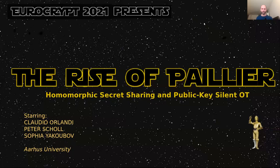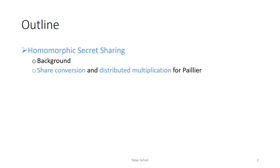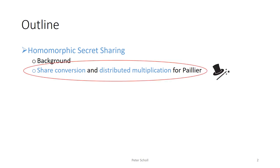Hi, my name is Peter and I'm going to tell you about this paper on homomorphic secret sharing and public key silent OT, which we build using new techniques for the Paillier cryptosystem. This is joint work with Claudio Olandi and Sofia Jakubov from Aarhus University. I'll start by introducing homomorphic secret sharing and then move on to our main technical highlight, which is a new share conversion procedure based on Paillier encryption.